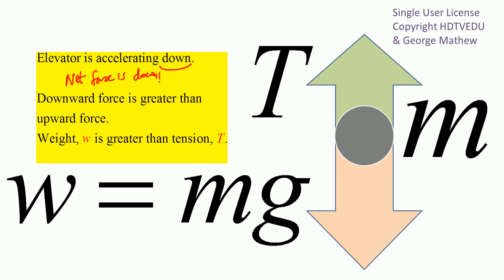If the net force is downward, the downward force is greater than the upward force. The upward force is tension, and the downward force is the gravitational force w. So here is our mass, here is our small vector tension T, and here is our big vector gravitational force mg, where w equals mg.